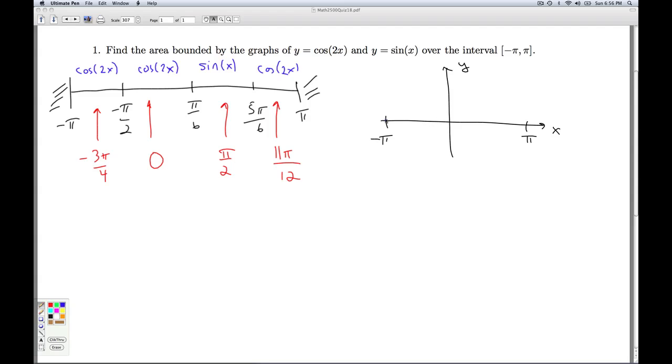Sine of negative pi is 0, and then about halfway through at negative pi over 2, we're going to be down at negative 1. And then at 0, we're back to 0. And halfway through, we're up at positive 1. And then at pi, we're back to 0. So we have a nice sine curve sitting in there. And the cosine 2x curve, we kind of know how that's going to go. But this helps us know where it's above and below and intersects this other curve. So at negative pi over 2, we know the two curves are going to intersect.